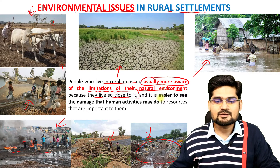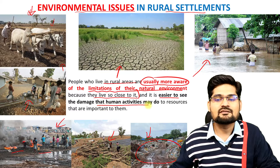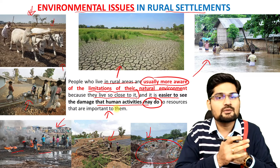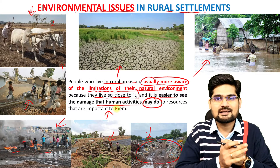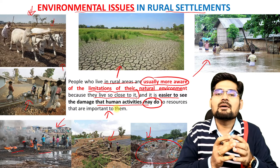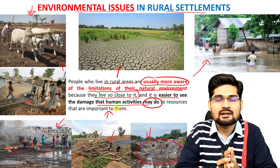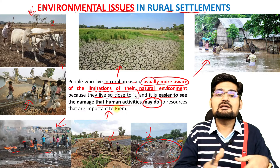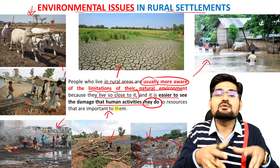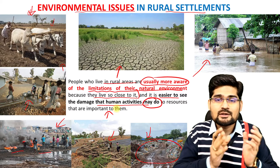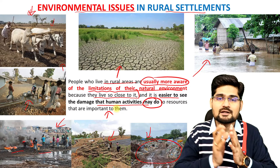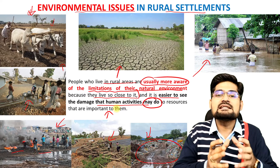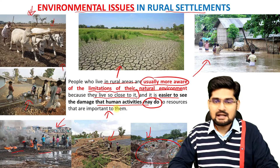It is easier to see the damage that human activities may do to resources, and which resources are important to them, if you look into rural areas. People are aware of how they are using resources and how changes are happening. But the idea is: how are we growing, how are we developing, and what are the issues and challenges faced by rural communities when the world is looking towards development and urbanization?